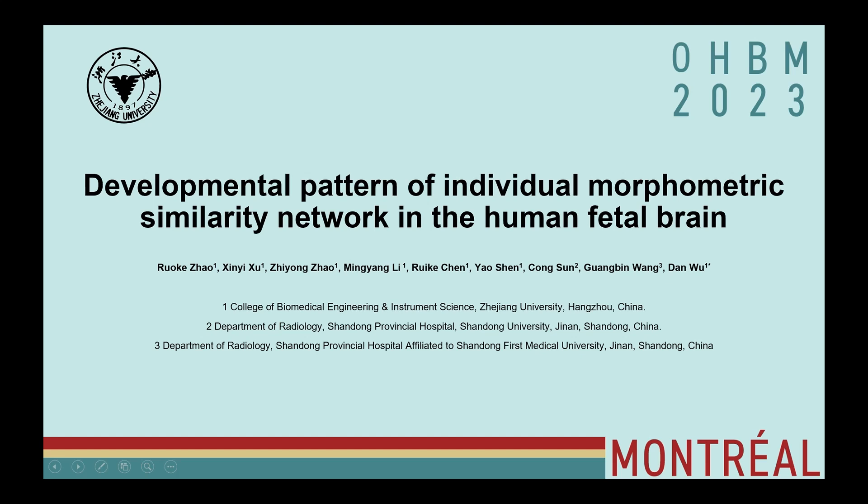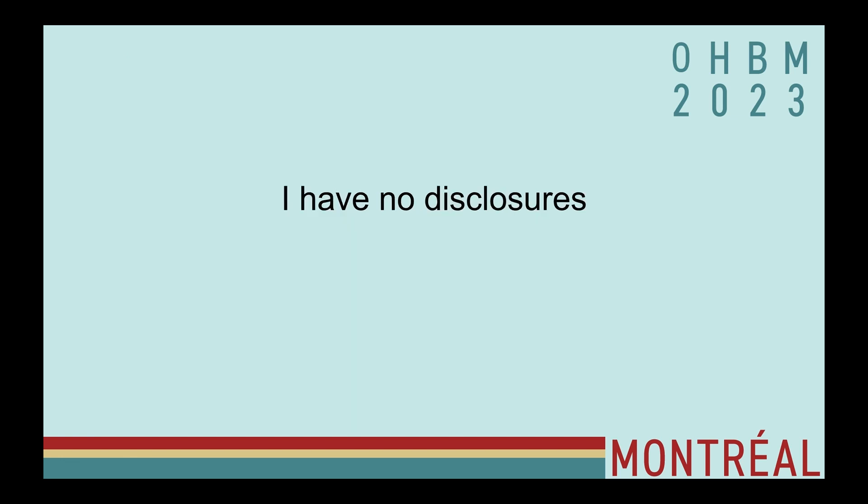Hello everyone, I'm Zhao Ruike from Zhejiang University. My topic is the developmental pattern of individual morphometric similarity network in the human fetal brain. I have no disclosures.